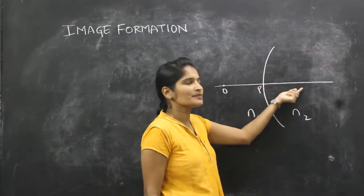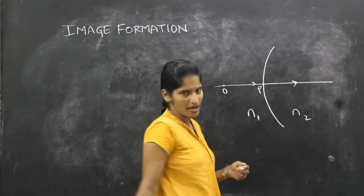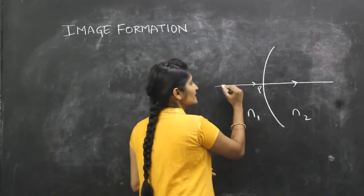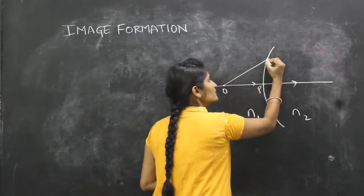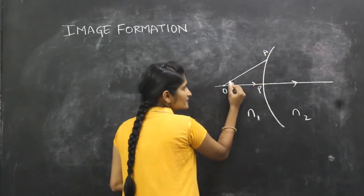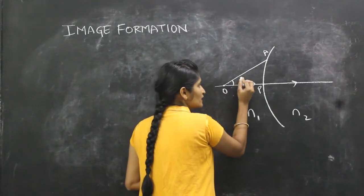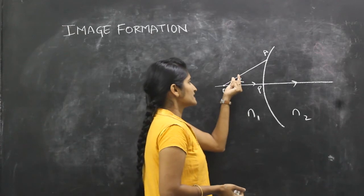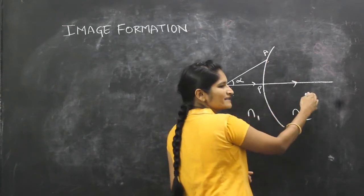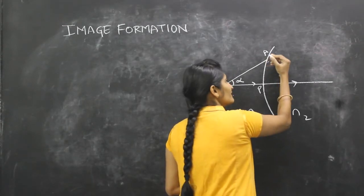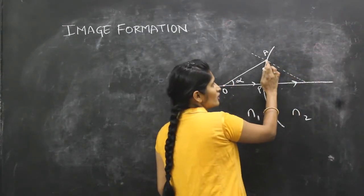When a ray is travelling along the principal axis, the refracted ray gets undeviated — that means it travels in the same path. Now we will take another ray making a certain angle with the principal axis. I am taking a ray from point object O and it is incident at point A. This incident ray is making a certain angle with the principal axis, so let this angle be alpha.